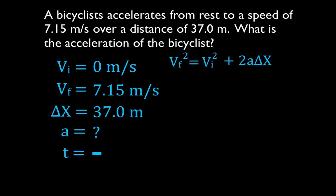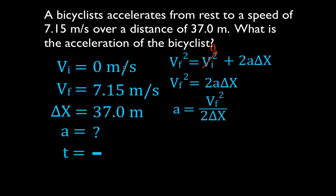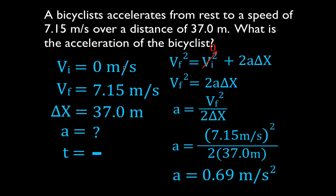Let's take our information and the equation to the next page. Now we can plug the values in and simply solve for the acceleration. You should notice we can simplify this a little bit. The initial velocity is zero, and therefore the initial velocity squared is also going to be zero, so that term goes to zero. Now we have the final velocity squared equals two times the acceleration times the change in position. Rearranging: acceleration equals the final velocity squared divided by two times the change in position. Plugging in: 7.15 squared divided by two times 37, giving an acceleration of 0.69 meters per second squared.